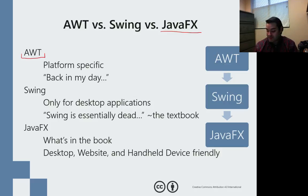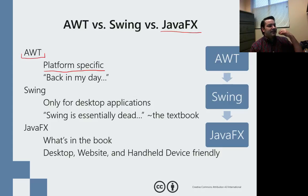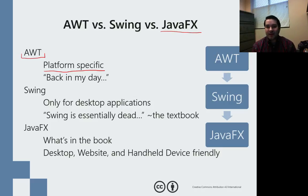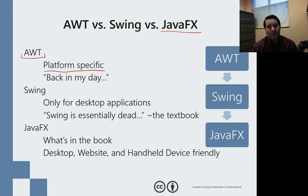Now the problem with AWT was it was platform specific. Java runs anywhere, but if I said I want to use a checkbox and run this in Windows, it's going to look like a Windows checkbox versus if I go to a Macintosh, it was looking like a Macintosh checkbox. From a design standpoint, it looks different on two different products — it might look bad on another product. And if you're a company looking to establish your brand, you don't want someone changing your brand on the fly.